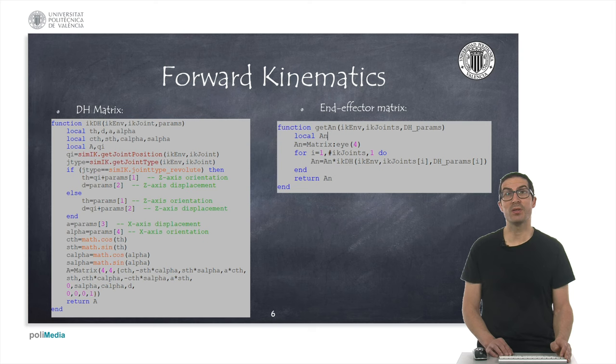The IKDH function that I include here allows to obtain the homogeneous transformation matrix using the Denavit-Hartenberg parameters. This is actually very similar to what we saw in a previous video regarding the forward kinematics, but in this case, I'm using IK joints position values, which means that we can set multiple configurations and compute the Jacobian matrix without actually moving the robot in CoppeliaSim scene. The getAn function allows to obtain the transformation matrix of the end effector with respect to the robot base.